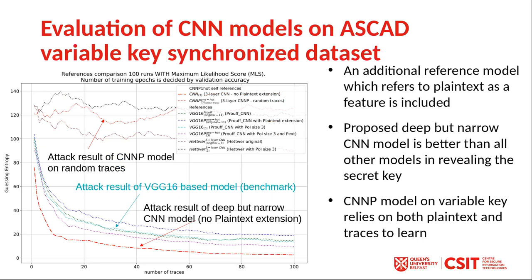This graph shows the results for the models on the ASCAD variable key dataset. The guessing entropy of our models is shown by the red lines. The dotted red lines show that our models rely on both the plaintext and traces to reveal the secret key. The dashed red lines imply that our deeper but narrower CNNP model without plaintext feature extension works better than the other reference models in revealing the secret key of the AES implementation.